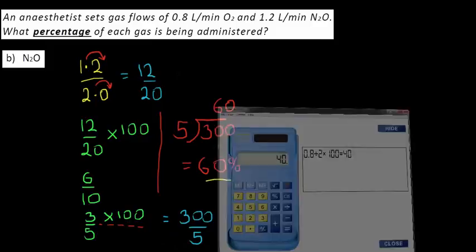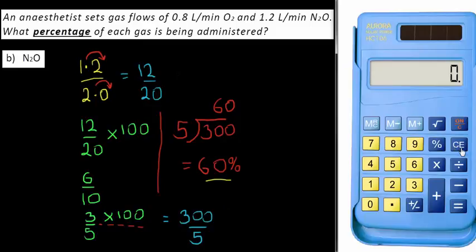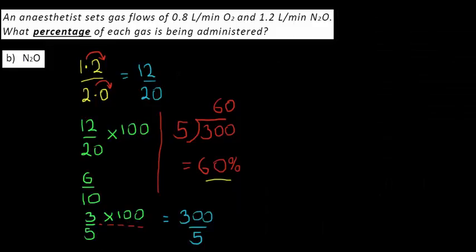Let's check with the calculator: 1.2 divided by 2.0 times 100 equals 60 percent, as expected. We had 40 percent for oxygen and 60 percent for nitrous oxide, and that adds up to 100 percent. This same method can be used if you have a mixture of more than two gases — simply find the total flow of all the gases, then gas by gas work out the proportion as a fraction of that total and multiply by 100.